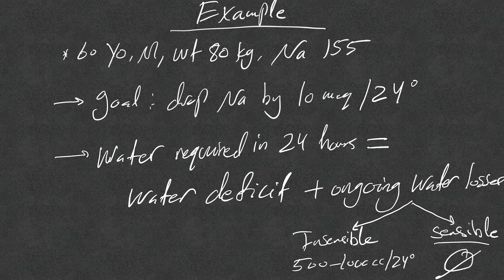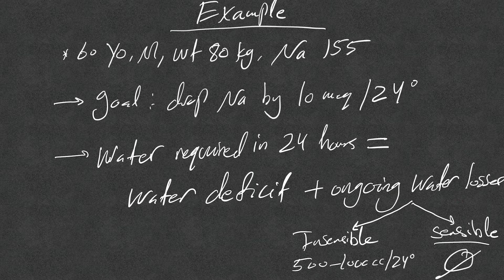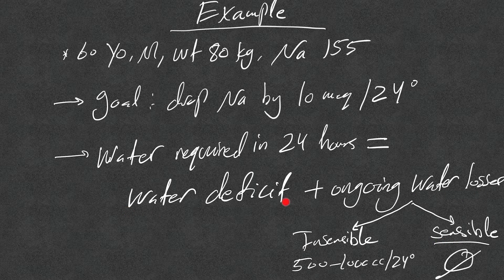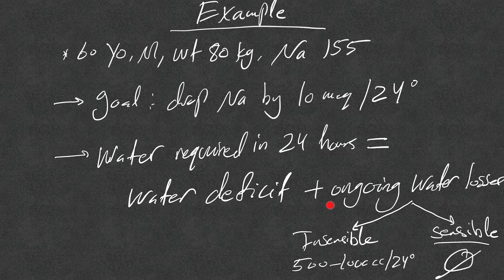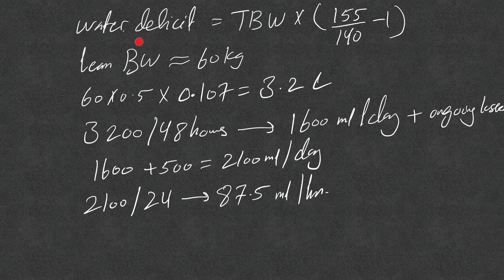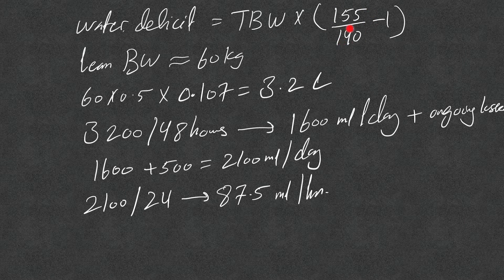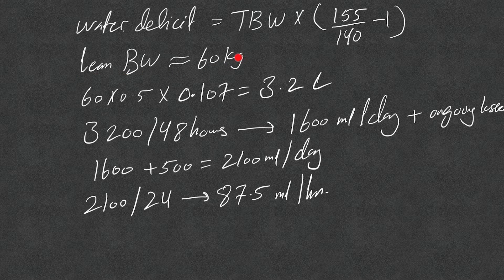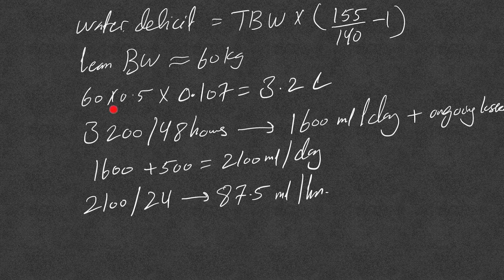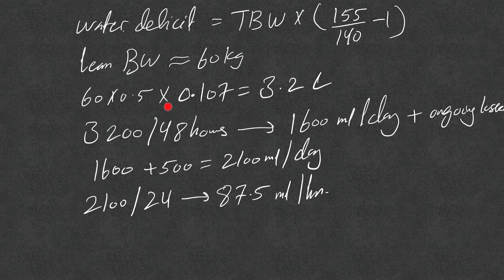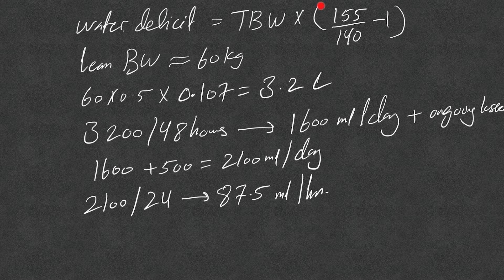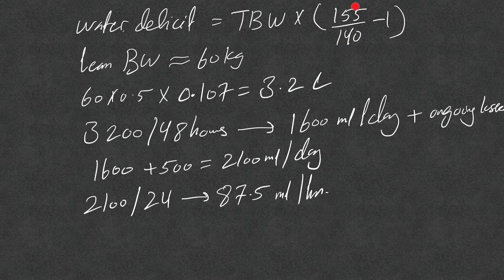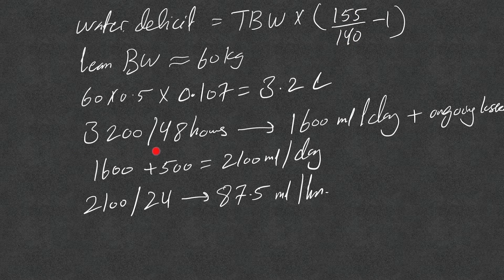So the goal is to drop sodium by 10 milliequivalents per 24 hours. The water required in 24 hours will equal water deficits that we're going to use the calculation, the equation for, then add the ongoing water losses, insensible or sensible water losses. Very important: most people focus here, give this only, and then they wonder why the sodium is not coming down or why the sodium is even worsening, because they don't calculate the ongoing water losses for that day. Now water deficit, we said total body water times 155 divided by 140 minus one. And remember lean body weight for this patient you need to calculate it, I think roughly 60 kilos. Then 60 multiplied by 0.5, because 60 year old we consider elderly, multiplied by 0.107, that means 3.2 liters. That's the total water deficit to get the sodium down to 140 from 155.